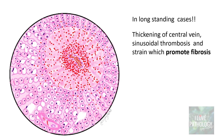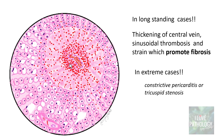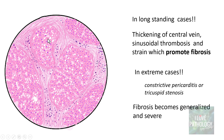In long-standing cases, there will be thickening of the central vein, sinusoidal thrombosis, and the strain promotes fibrosis. In extreme cases, particularly in conditions like constrictive pericarditis or tricuspid stenosis where there is extreme right heart failure, extreme pressure is transmitted into the central vein leading to lots of fibrosis. Finally this fibrosis becomes generalized throughout the liver, resulting in cirrhosis — called cardiac cirrhosis, because the origin of this cirrhosis is due to right-sided cardiac failure. We had earlier studied that alcoholism is the most common cause of cirrhosis; now we also have the cardiac cause.